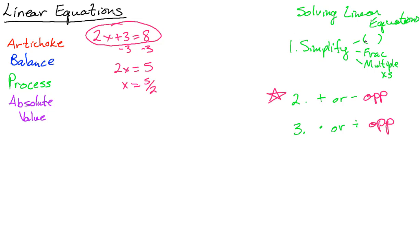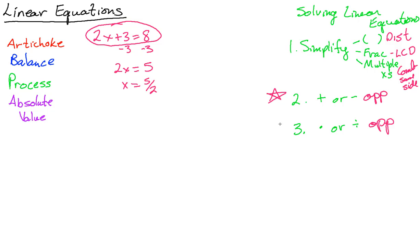Step one is to get it down to the simplest form. If you have parentheses, distribute. If you have fractions, multiply through by the least common denominator. If you have multiple x's, combine them and get all variables onto one side. Then step two: get numbers and variables on the same side. These three steps will be familiar to your students.